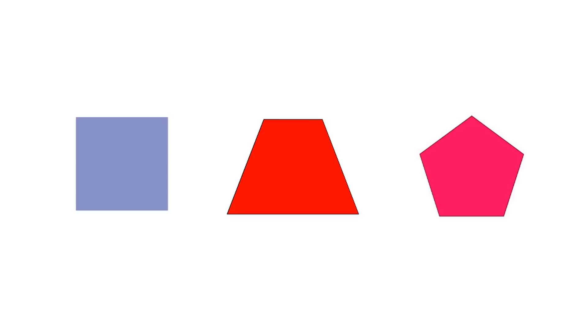This is a little trickier. Which shape is in the middle? A trapezoid! Which shape is on the right? The pentagon — good job! Which shape is on the left? The square. Now try these: which shape is on the bottom? The oval! Which shape is on the top? The parallelogram! Which shape is in the middle? The rectangle — great job!